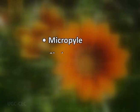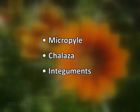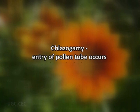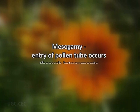In the ovary, the pollen tubes are guided to the ovules and may enter the ovule through the micropyle, chalaza, or integuments. The entry of the pollen tube through the micropyle is called porogamy, while entry through the chalaza is called chalazogamy, and entry through the integuments is called mesogamy.